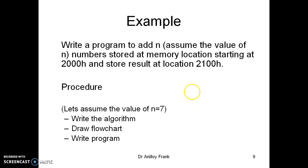In this example, we try to add N numbers which are stored at starting location 2000. The N numbers, the first number will be at 2000, the next one at 2001, 2002 and so on. And the result is stored at 2100. In this case, we can assume the number N. So, we assume the value of number N is 7. We start by writing the algorithm, then we draw the flowchart and finally we write the program.